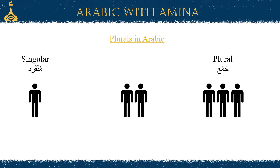If it's two, it's called another thing — it's called a dual or muthanna. In today's video, we're going to be focusing on plurals. If you'd like to know more about duals, please check out our other video concerning that matter.